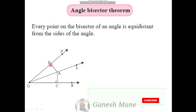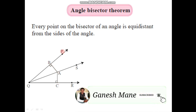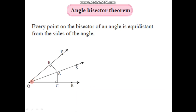AB is the distance of point A from side PQ of angle PQR, and AC is the distance of point A from side QR of angle PQR. By this theorem, AB is congruent to AC, meaning point A is equidistant from both sides PQ and QR. Therefore, segment AB is congruent to segment AC.